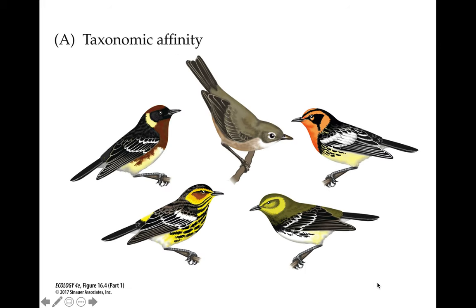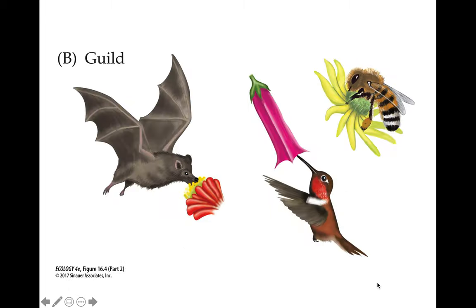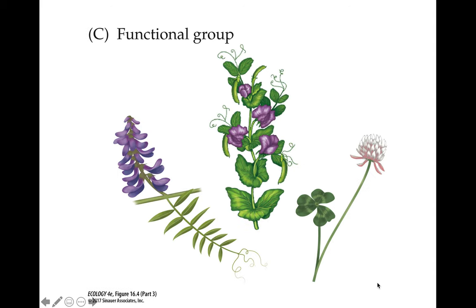Here are birds as an example of a taxonomic affinity — they're all evolutionarily related. A guild: here's an example where these might all be pollinators, and you can see that members of this guild are not evolutionarily closely related to each other. And a functional group — these are all lupines, examples of plants that acquire their nitrogen with the assistance of nitrogen-fixing bacteria.